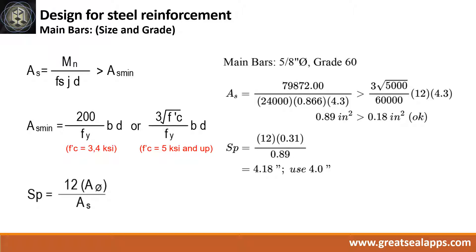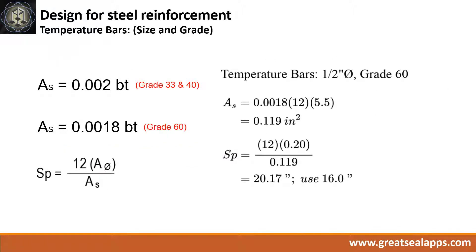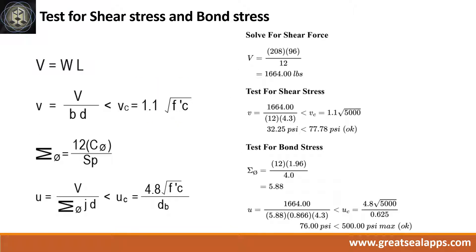The area of steel is 0.89 square inch, and the spacing for 5/8-inch diameter bar is 4 inches on center. The area of steel for temperature bars is 0.119 square inch, and the spacing for 1/2-inch diameter bar is 16 inches. The shear force is 1,664 pounds. The shear stress is 32.25 PSI, less than the allowable 77.78 PSI. The total circumference of bars is 5.88, and the bond stress is 76 PSI, less than the allowable 500 PSI.